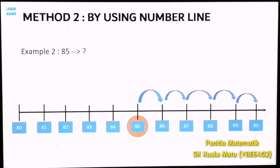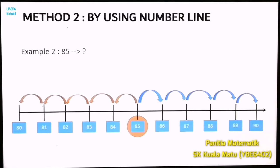Now from number 85, count how many steps to reach number 80 — 1, 2, 3, 4, 5. It's also 5 steps. Compare which is nearest. In this case, 85 is located in the middle of 80 and 90. Therefore, we choose the largest 10 number as the answer. So the answer is 90.